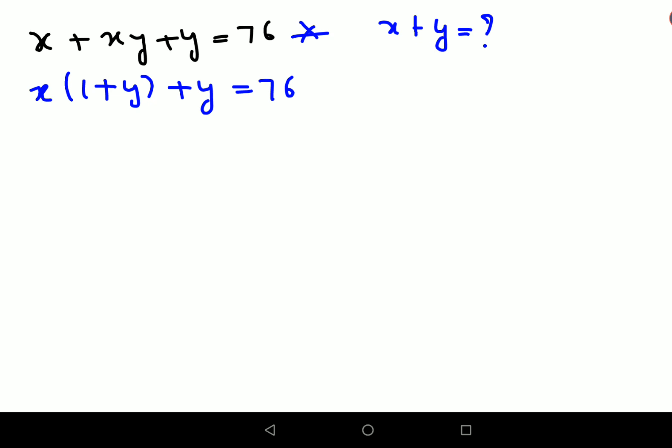So in this kind of scenario what you should do is we'll try and add 1 on both sides. So basically now your question changes to x times (1 plus y) plus (1 plus y) equals to 77.